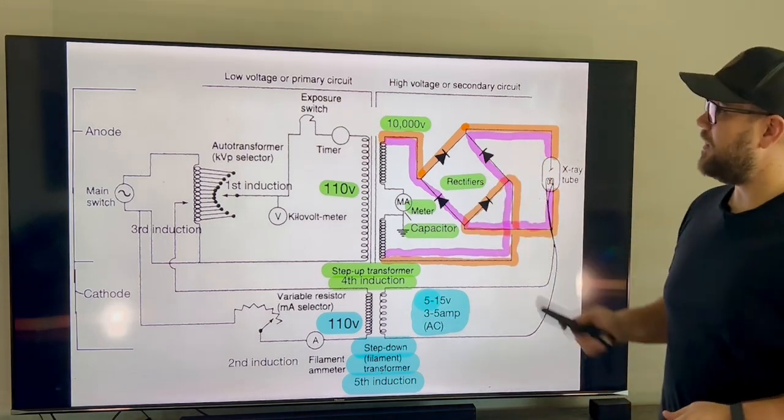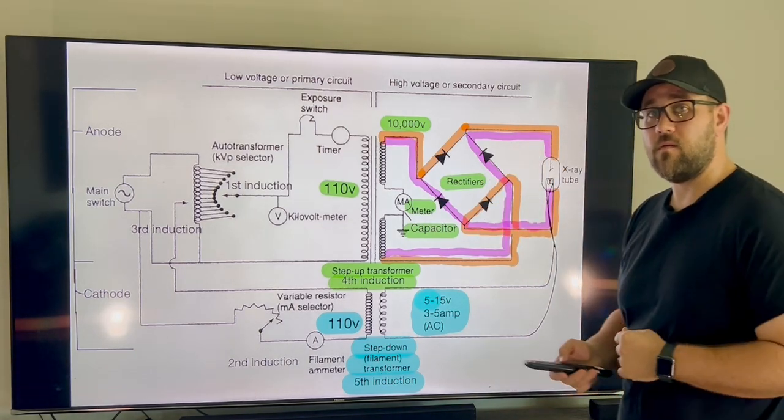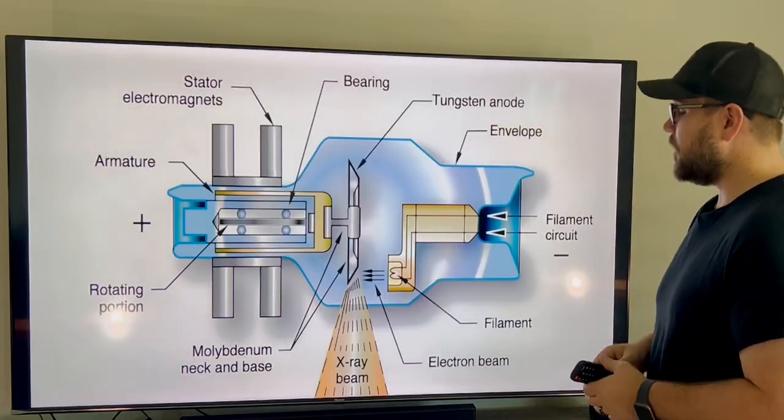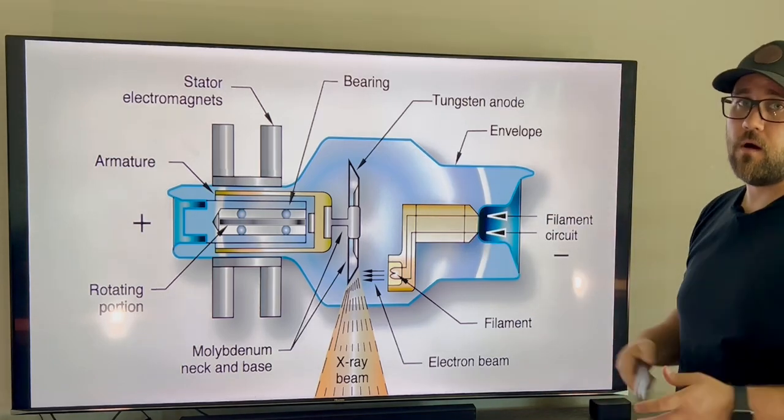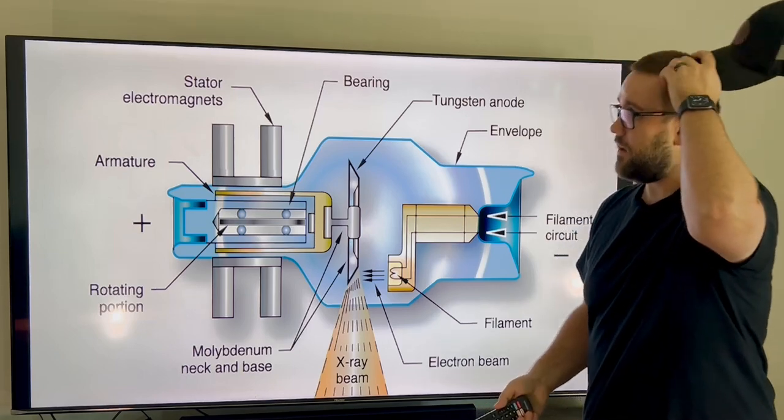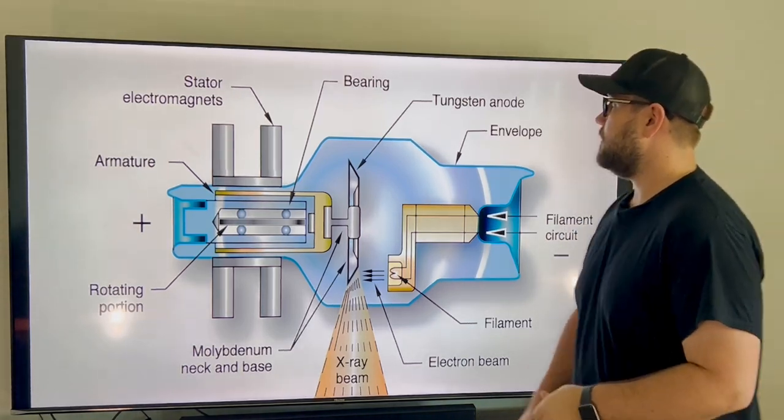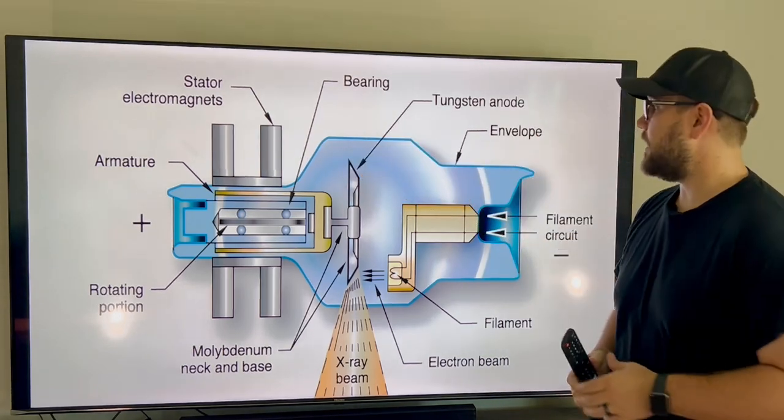So now that we've talked all about the circuit side, let's jump over to our envelope. Okay, so this is our envelope. Before we move too far on, I just want to talk about a few parts, kind of what they are. So on our anode side, we have our 10,000 volts pulsating DC coming in, and it's going to be electrifying our magnets, our stators. In turn, it'll rotate our armature or rotor. We have our bearings which are going to spin our tungsten anode.